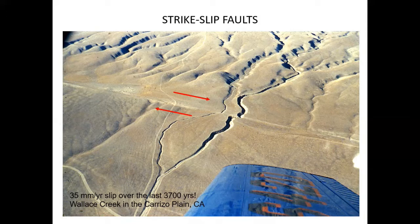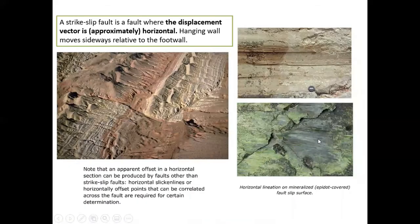This is one of the best examples of a large-scale, regional-scale strike-slip fault, and it is also a transform fault because it lies between two large tectonic plates and separates them. A strike-slip fault is a fault where the displacement vector is horizontal or approximately horizontal and the hanging wall moves sideways relative to the footwall, instead of up and down.